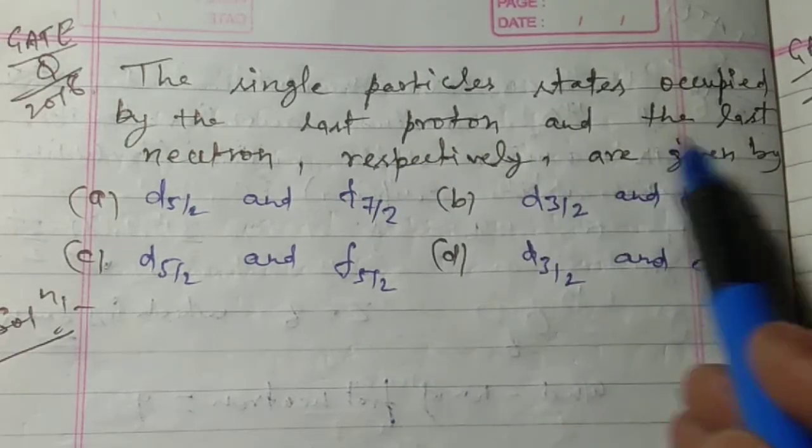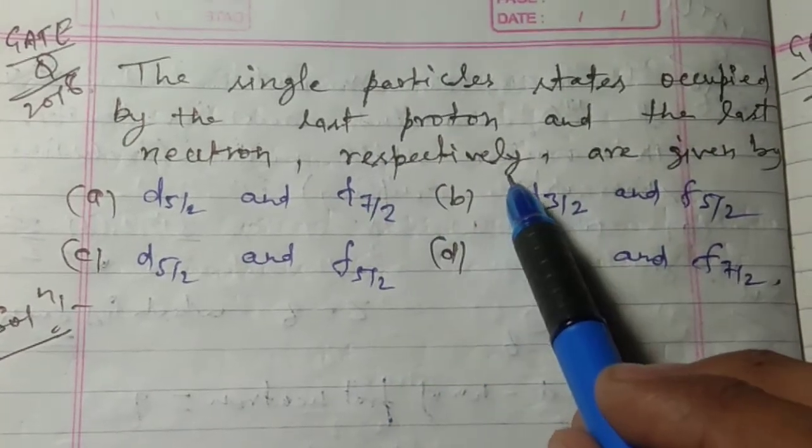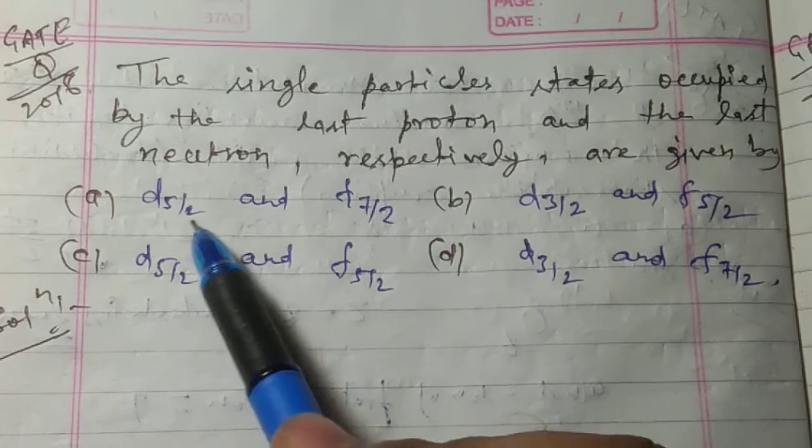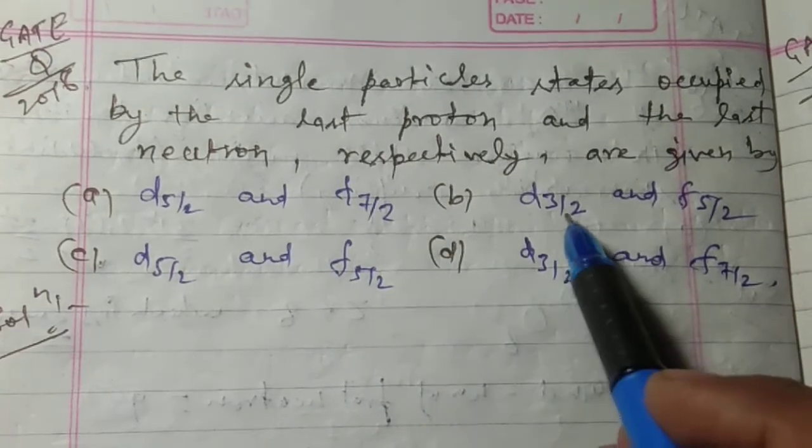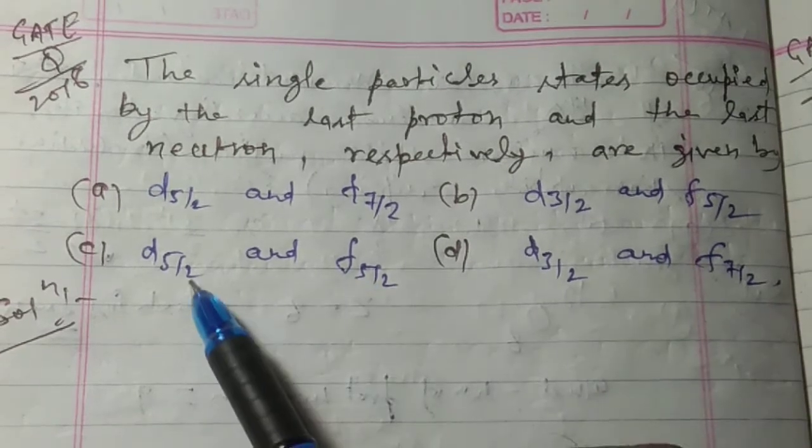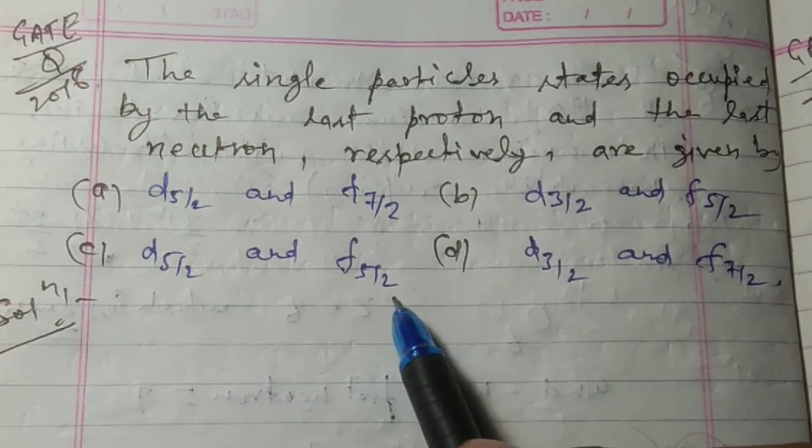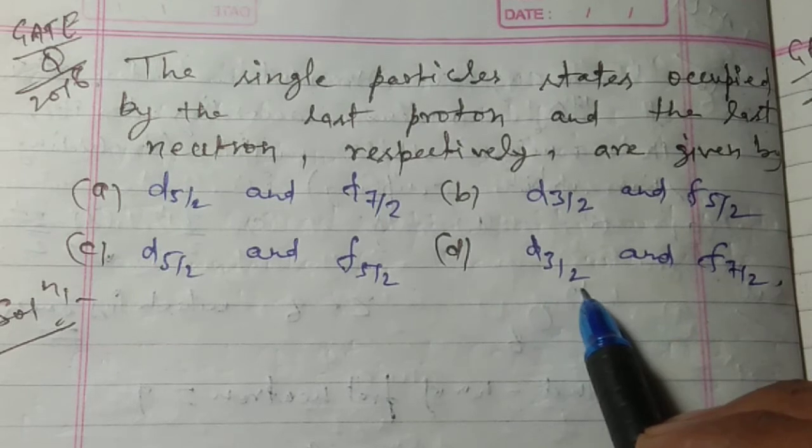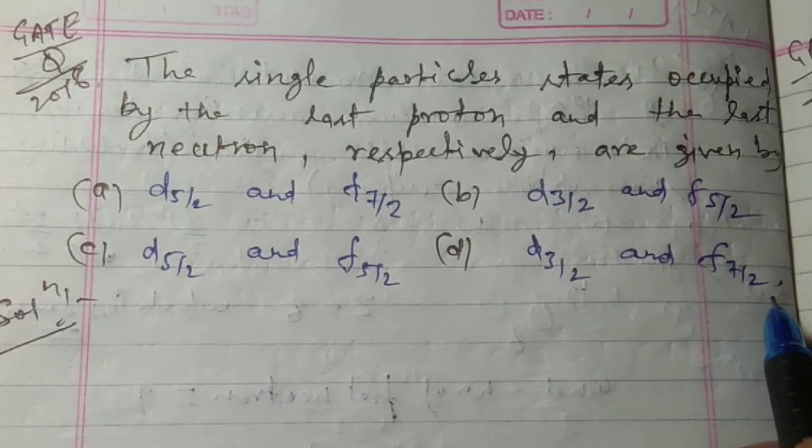...are given by: (a) d5/2 and f7/2, (b) d3/2 and f5/2, (c) d5/2 and f5/2, or (d) d3/2 and f7/2.